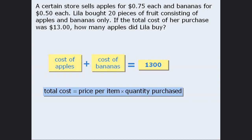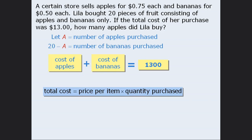The question asks us to find the number of apples purchased, so let's let A represent the number of apples purchased. What about the number of bananas purchased? Well, if Leela purchased 20 pieces of fruit altogether and the number of apples is A, then 20 minus A must equal the number of bananas purchased. Now that we have expressed the quantities as algebraic expressions, we can apply the formula. The cost of the apples will be $0.75, the price per apple, times A, the number of apples. The cost of the bananas will be $0.50, the price per banana, times 20 minus A, the number of bananas.